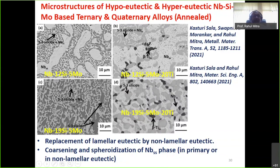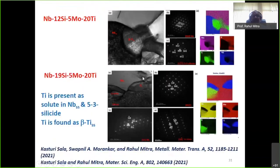On annealing there is coarsening of the primary NbSS phase and interconnection of the NbSS network. After annealing at 1500°C for 100 hours for both hypoeutectic and hypereutectic alloys, the lamellar eutectic completely converts to non-lamellar eutectic and coarsening and spheroidization of NbSS occur. TEM imaging shows the presence of β-titanium solid solution at intergranular locations between NbSS and Nb5Si3 in both compositions — this forms due to rejection of excess titanium during solidification from NbSS and Nb5Si3, with β-TiSS solidifying last at grain boundaries.